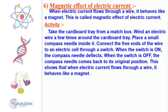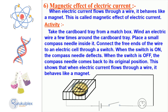When electric current flows through a wire, it behaves like a magnet. To demonstrate this, wind an electric wire a few times around a cardboard tray from a matchbox and place a small compass needle inside it. Upon switching the electricity on, the compass needle will deflect, and when the electricity is switched off, the needle will return to its original position. This demonstrates that electric current behaves like a magnet.